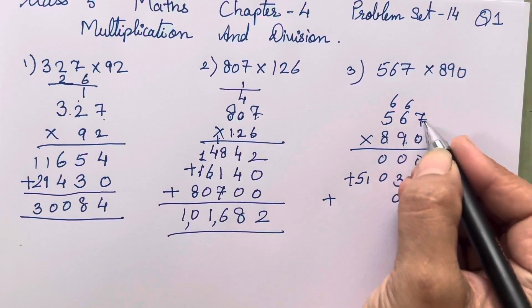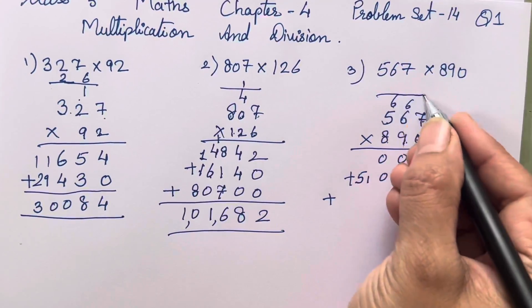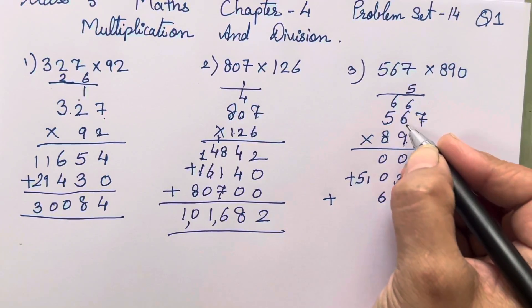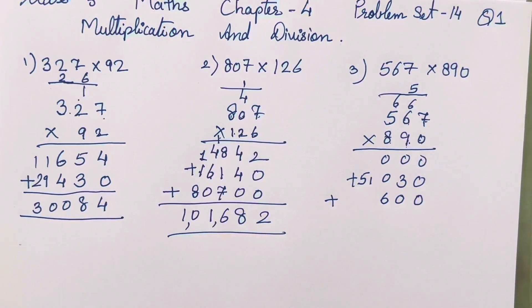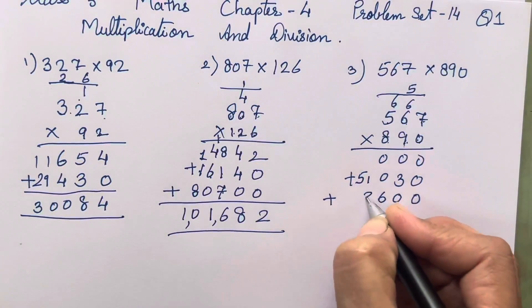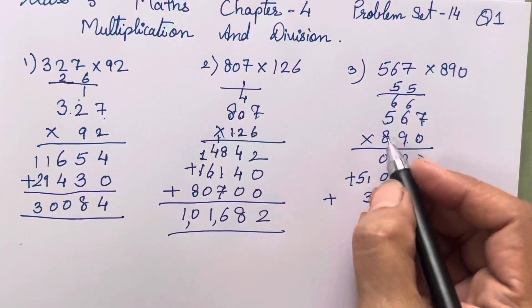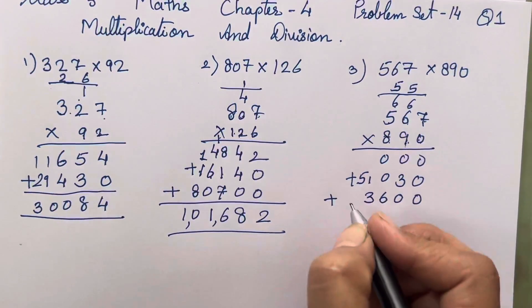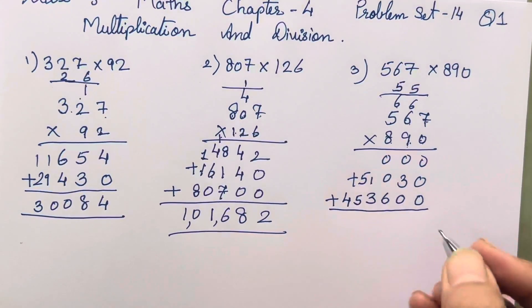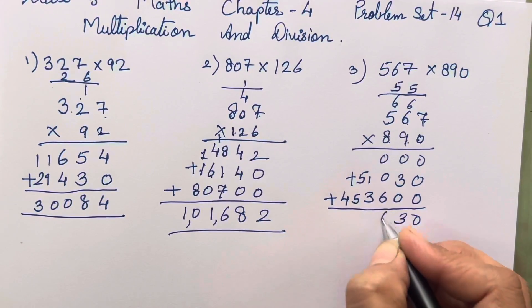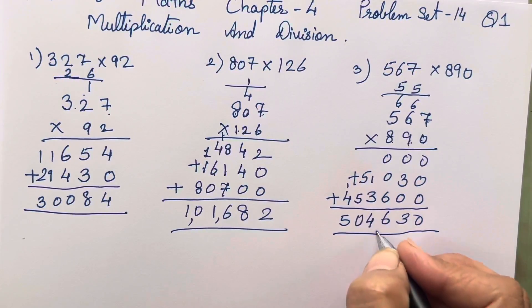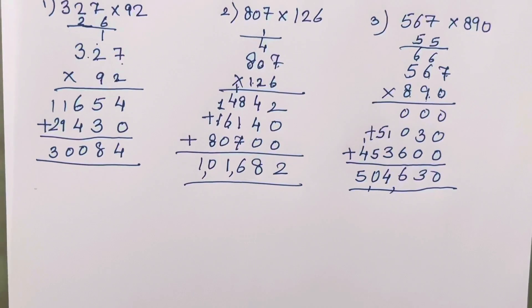So for the next digit again carry 2 zeros first. Then 8 sevens are 56. So 5 will come over here, 6 will come over here. 8 sixes are 48, 49, 50, 51, 52, 53. So 5 eights are 40, 40 plus 5 is going to be 45. So 0, 3, 6, 4, 10 and 5. This is your answer for the third sum.